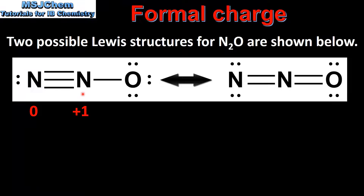The middle nitrogen atom has five valence electrons, minus half of eight which is four, giving a formal charge of plus one. And for this oxygen atom we have six valence electrons, minus six non-bonding electrons, minus half of two which is one, which gives a formal charge of negative one.